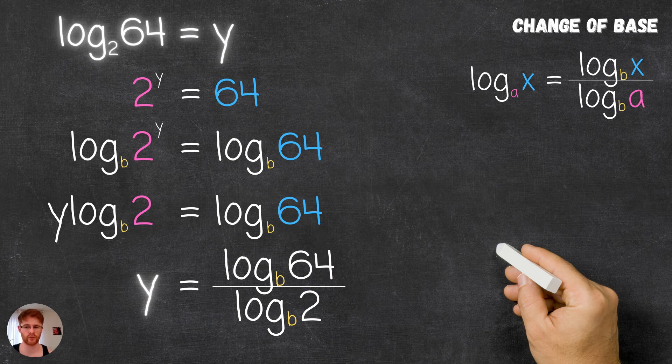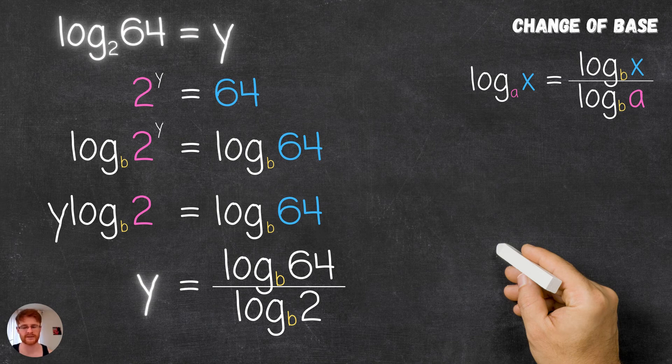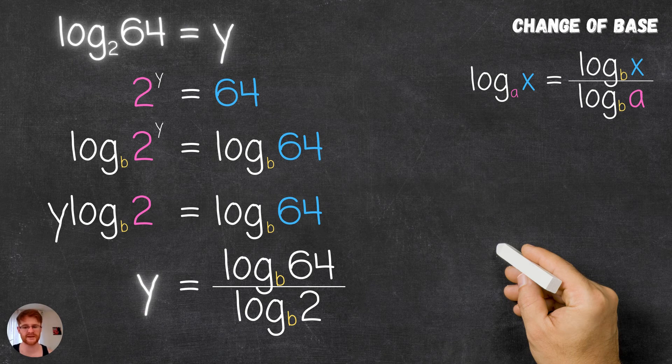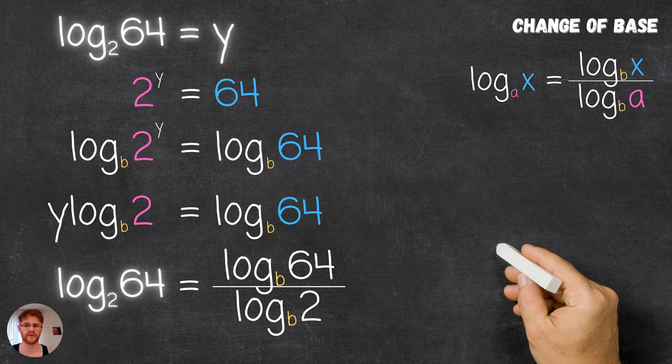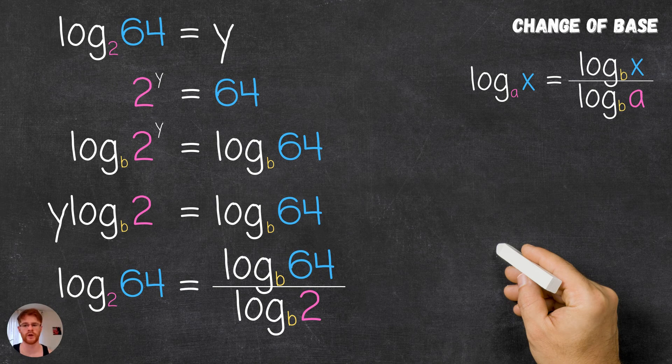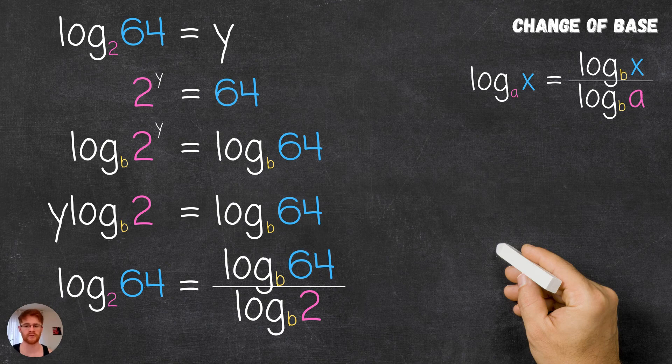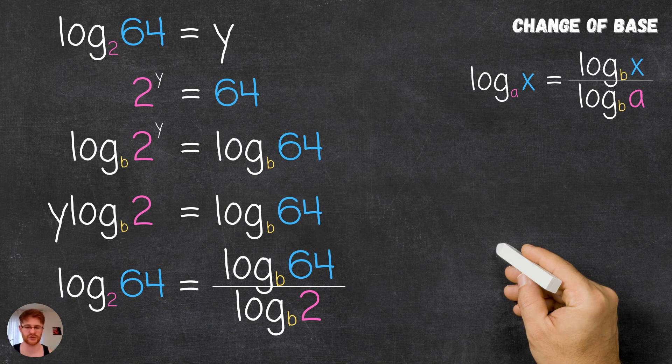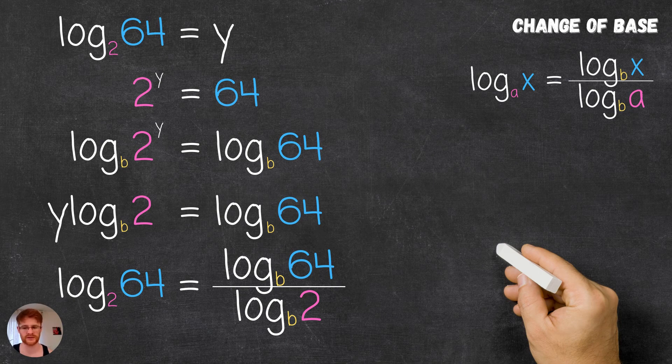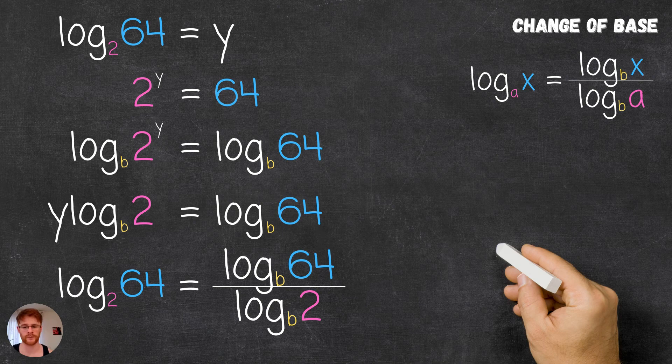Also remember that before rewriting the equation in index notation, we had that log base 2 of 64 was equal to y. So replacing y, we have that log base 2 of 64 can be written as the ratio of the logs of the new base b, where we're taking the log of the exponential 64 in the numerator and the log of the previous base 2 in the denominator.